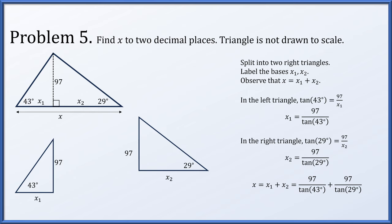Therefore, x, what we are trying to solve for, is x1 plus x2, which is 97 over the tangent of 43 degrees plus 97 over the tangent of 29 degrees, which is approximately 279.01.